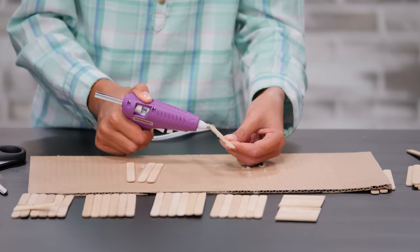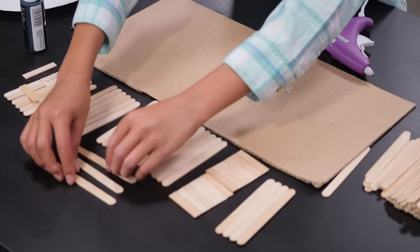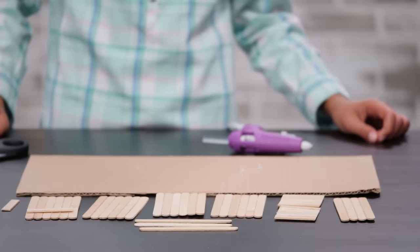To make the false box lid, glue four popsicle sticks side to side. Keep three popsicle sticks for later. You'll use these to make the details on the box. Now to assemble the box.